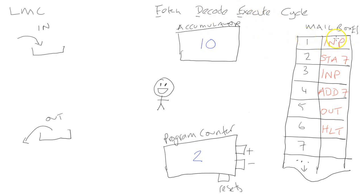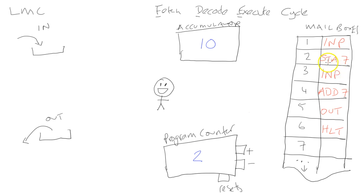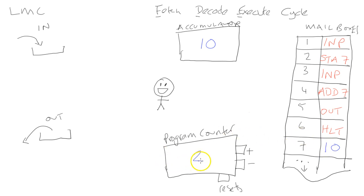He decoded that the instruction meant input, went to the input tray, fetched that piece of data, and put it into the accumulator. Program counter goes to 2. He walks over to position 2, looks at the instruction, sees that it says STA - which stands for store accumulator - and it also has a mailbox location: store the value of the accumulator into mailbox 7. So he takes that 10, copies it, and stores it into position 7. Having completed that command, he increases the program counter to point to position 3.